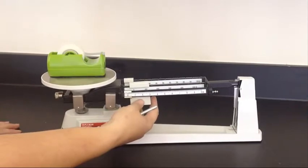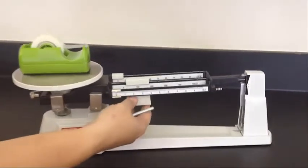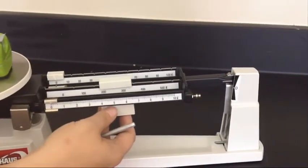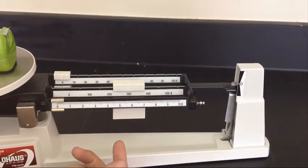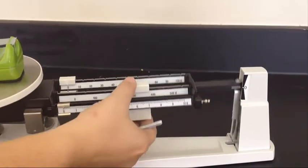So we move one weight. Beginning with the hundreds place in the center, we move over carefully until the beam falls down. When the beam is at the bottom, it indicates that the weight is too heavy. So we move back one.